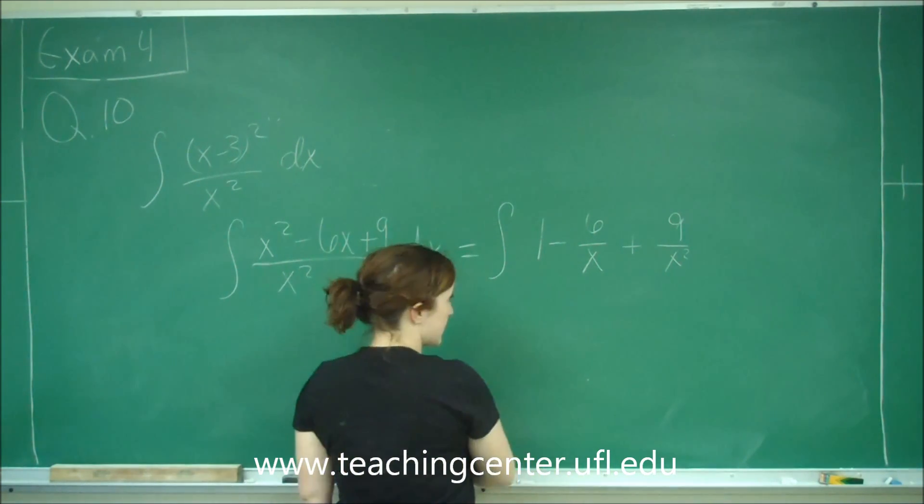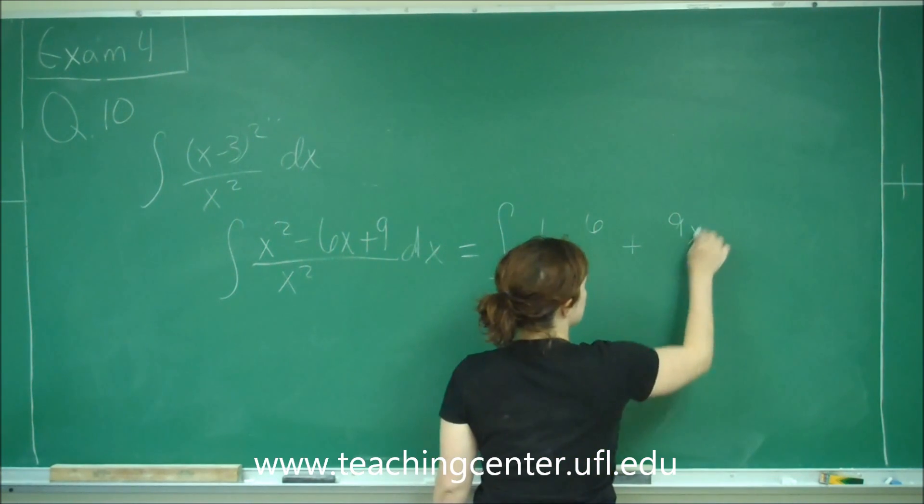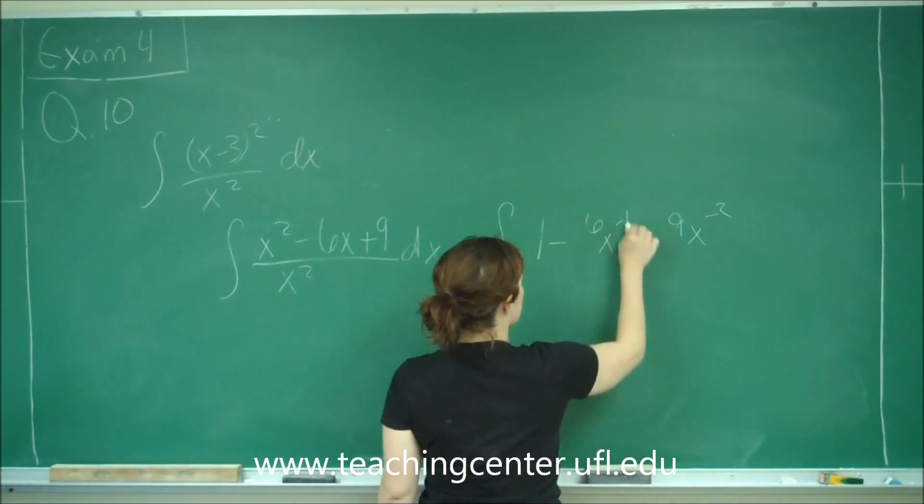We're going to rewrite those: 9x^(-2), 6x^(-1).